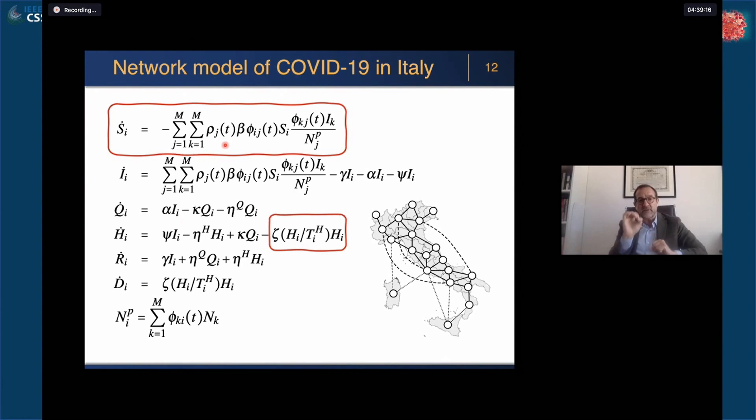Another feature, this parameter zeta, that actually becomes a function of this ratio that we looked at with particular care. It's the ratio between the number of hospitalized H_i and the total threshold T_iH each region has on the level of beds in hospital. This is now a very important issue. In Italy, we have a dramatic variation of the NHS capability across the regions, and this must be taken into account.